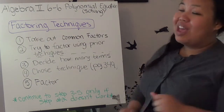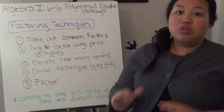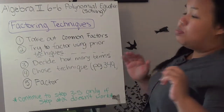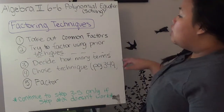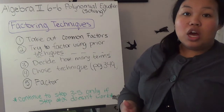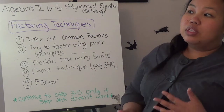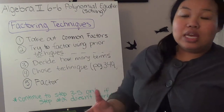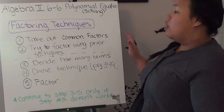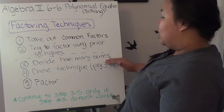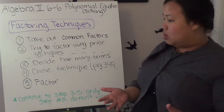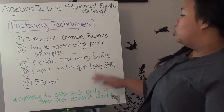The first thing is you want to take out any common factors that each term has, put it outside in parentheses, and just focus on what's left over. Then you want to try to factor using prior techniques, especially if it's a quadratic equation — the quadratic formula, completing the square, things like that. If that doesn't work, especially if there's more than x squared, you move to the next step and decide how many terms you have, then choose a technique.